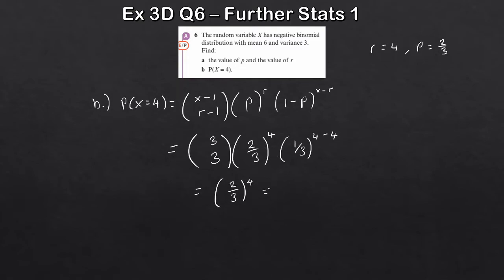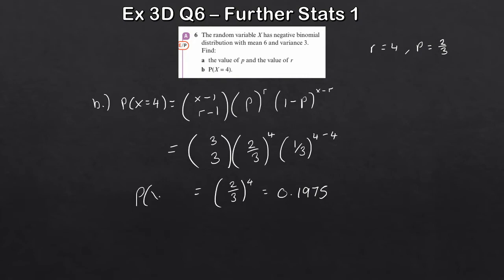Putting (2/3)⁴ into your calculator gives 0.1975, or 0.198 depending on rounding. So that's the probability that X equals 4.